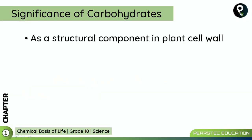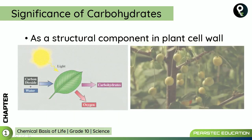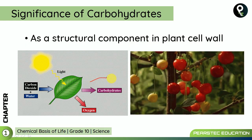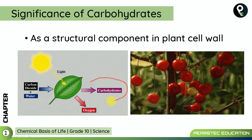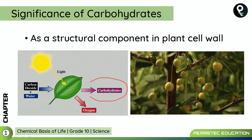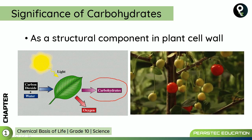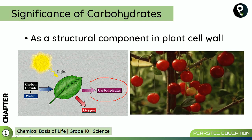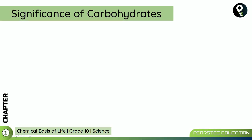As a structural component in the plant cell wall — we learned about this. Carbohydrates are produced due to photosynthesis, and when fruits are ripening, sucrose is being generated. We also learned about this in our previous session.